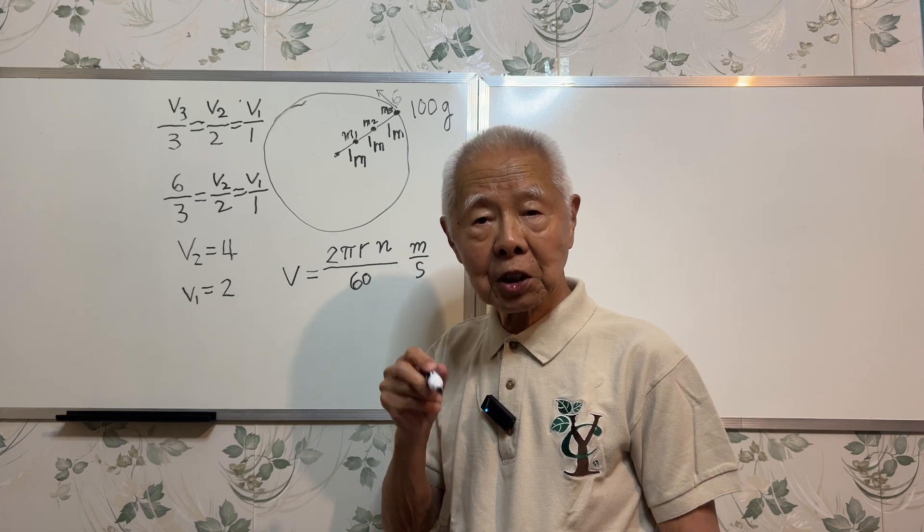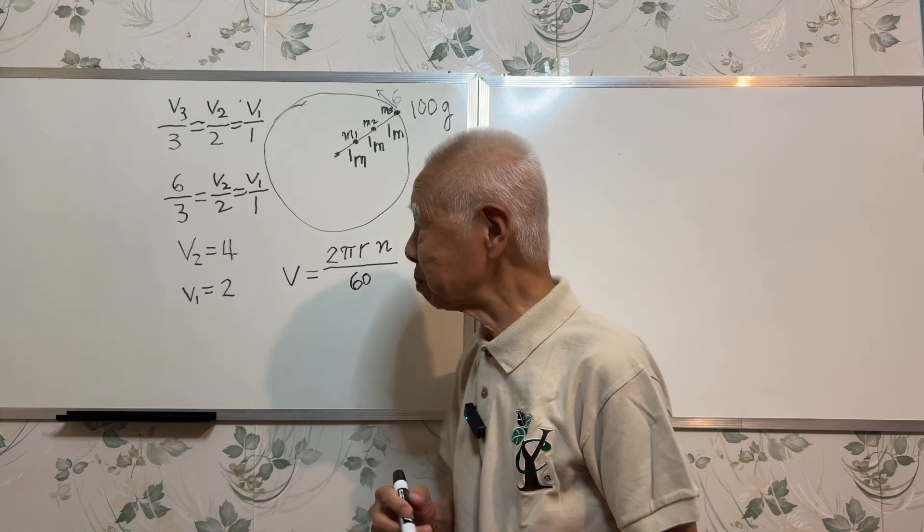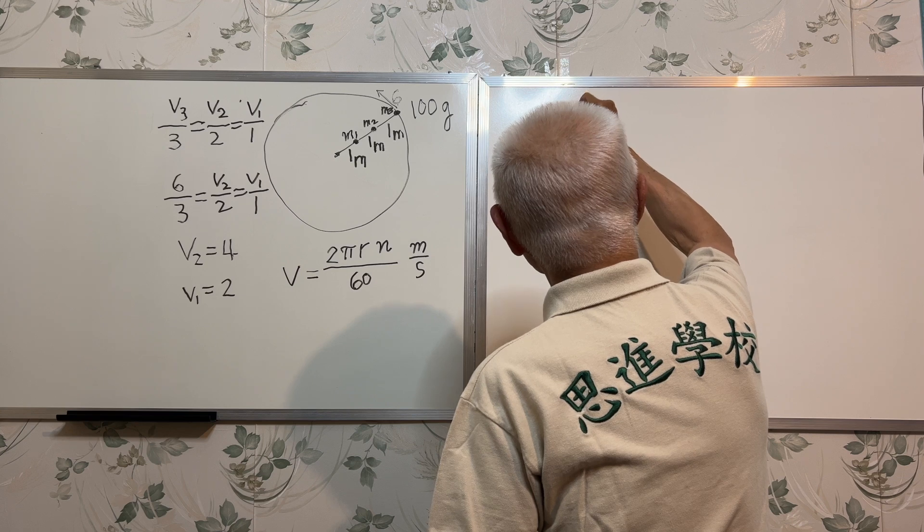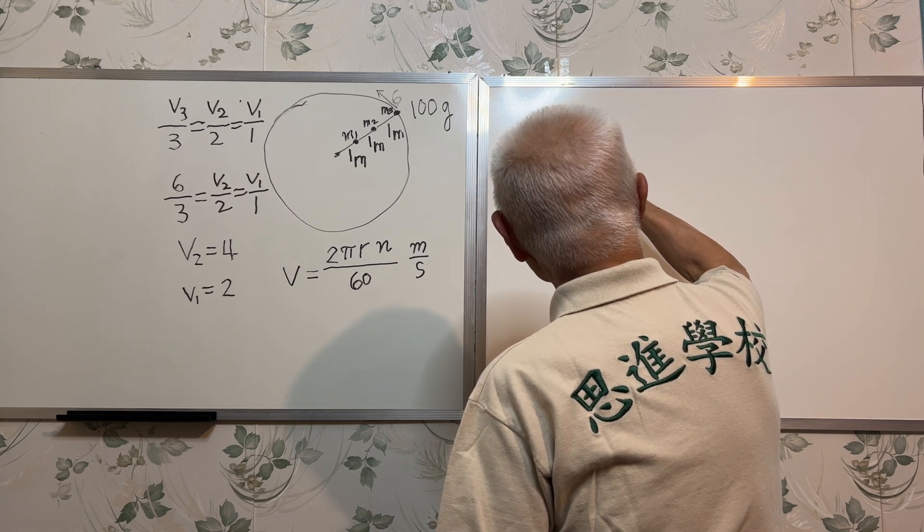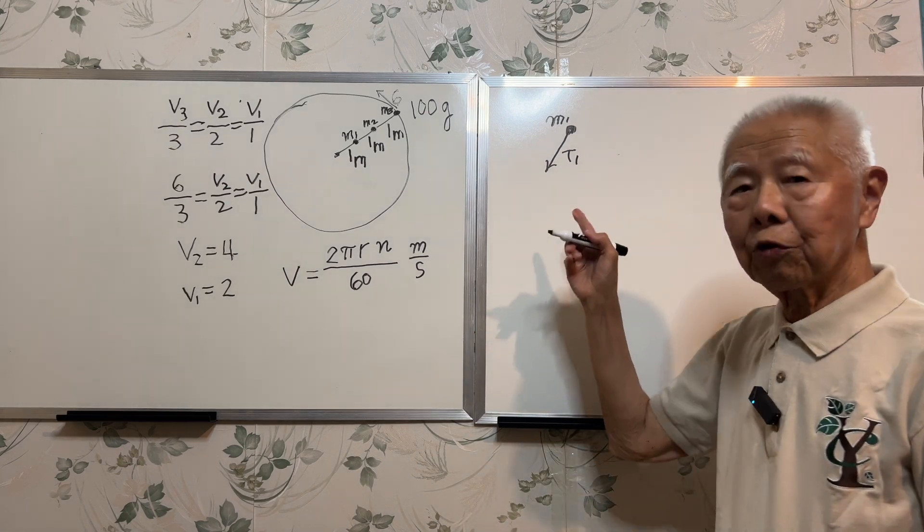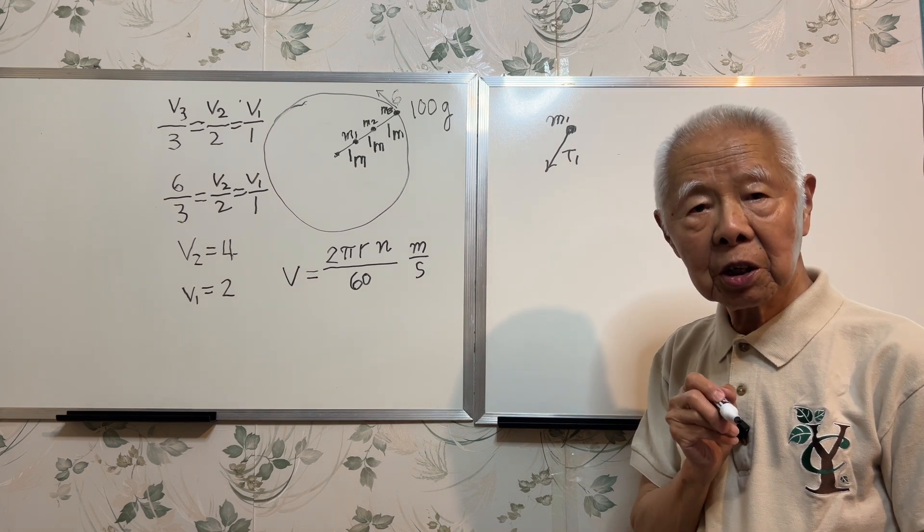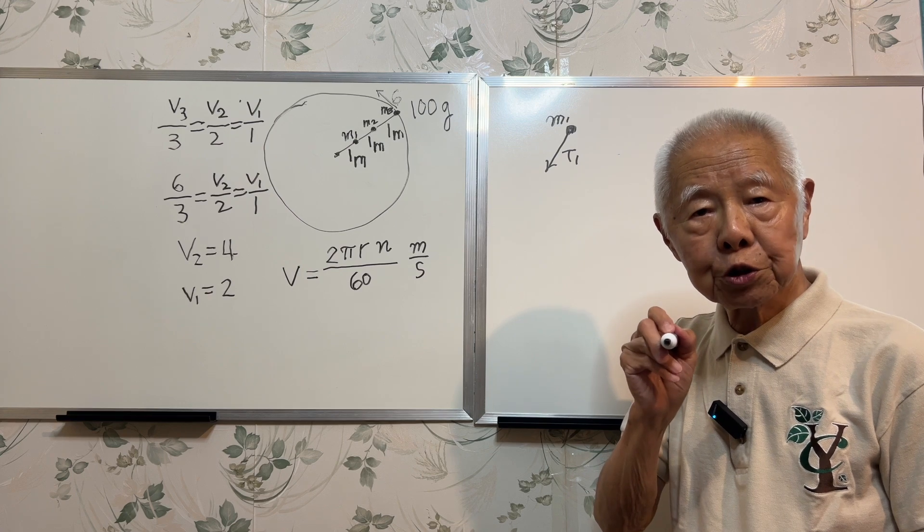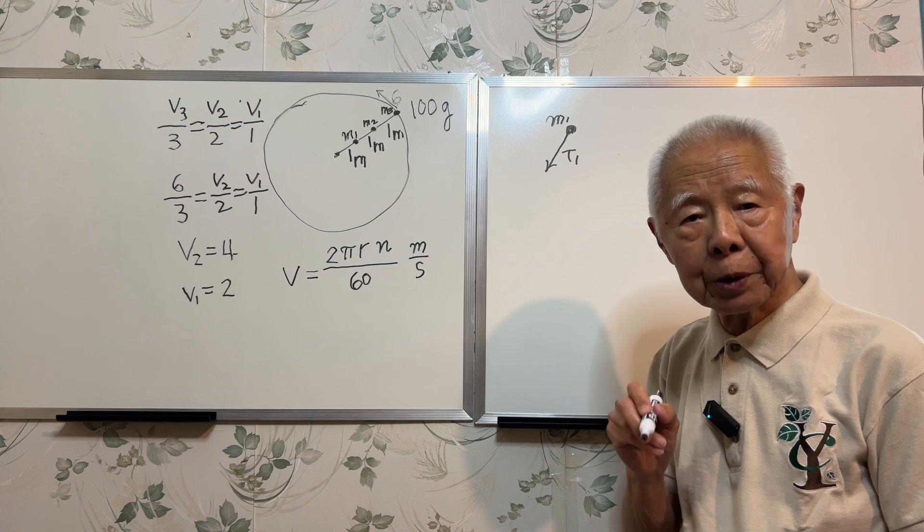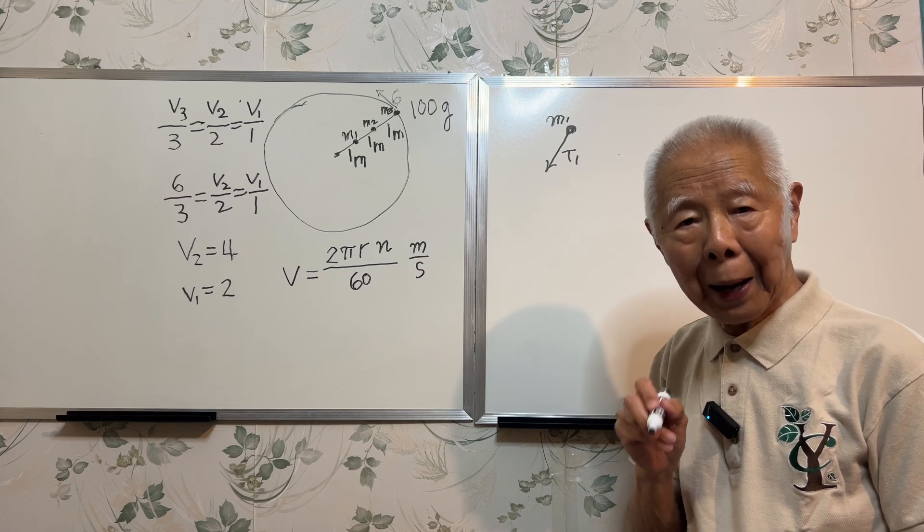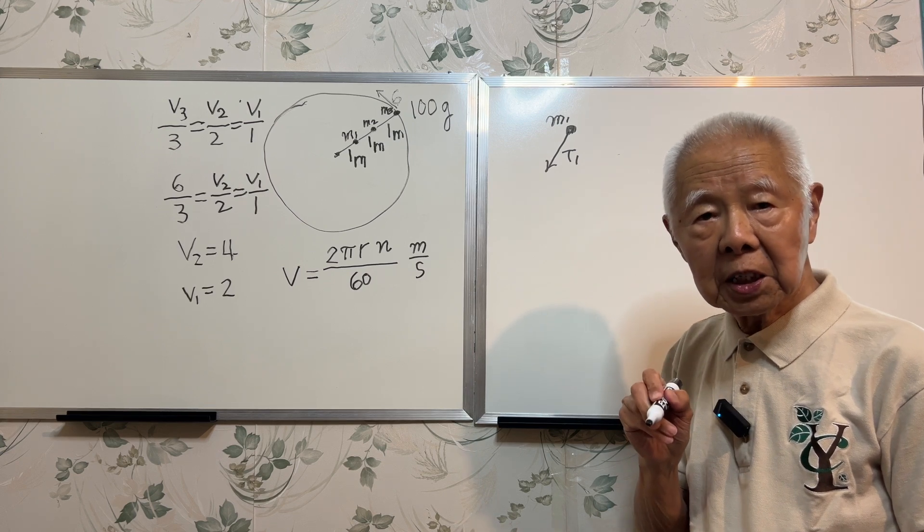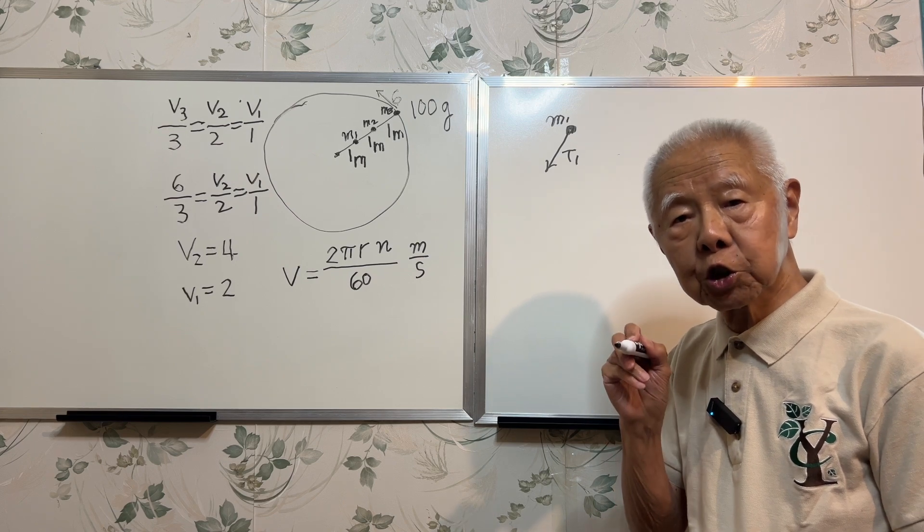Once we know this, then we can go ahead to find the tensions in the three sections of the string. To find the tension, tension is a force, so I need force equals ma. But remember this is a circular motion, therefore the force is centripetal force. The formula for centripetal acceleration is acceleration equals v squared over r.